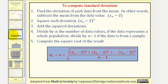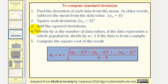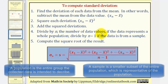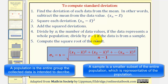Here's how we find the standard deviation. Step one: find the deviation of each data value from the mean — in other words, subtract the mean from each data value, represented as x sub n minus x-bar. Step two: square the deviation. Step three: add the squared deviations. Step four: divide by n if the data represents a whole population, or divide by n minus one if the data is from a sample. Step five: compute the square root of the result.